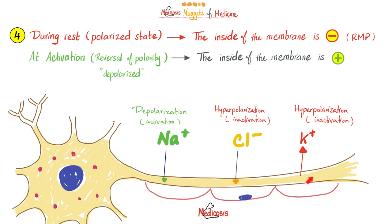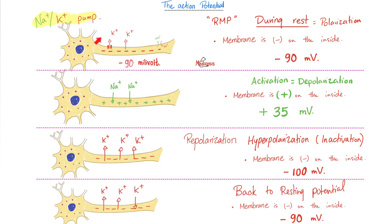During rest, the inside of the membrane is negative but upon activation, aka depolarization, more accurately reversal of polarity, the inside of the membrane becomes more positive. During rest, the membrane is resting. The inside of the membrane is negative. Why? Because positive is leaving. Potassium efflux.